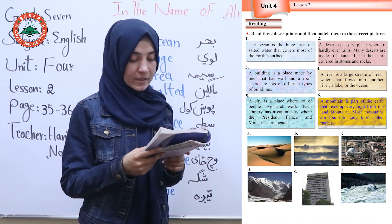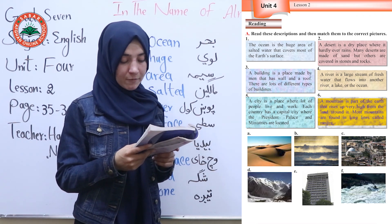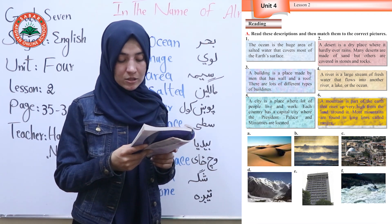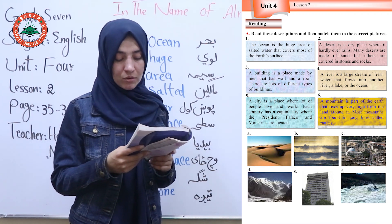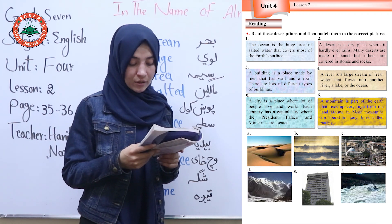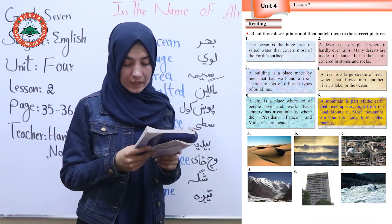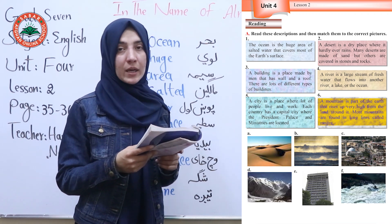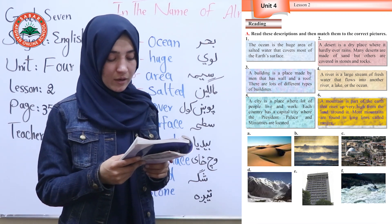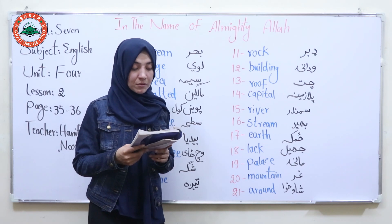Number 6: A mountain is part of the earth that raises up very high from the land around it. Most mountains are found in long lines called ranges — dir guruna pa ok doh hatonu paida kigi chee da silsile ponum yaa digi silsile yaa ham ladai mongor tawa ilishu range.